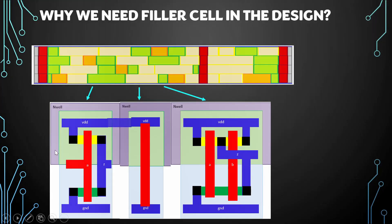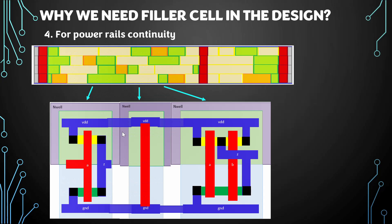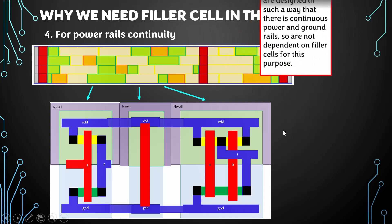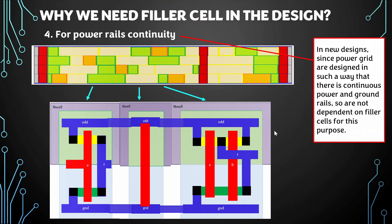If we stretch the VDD of one cell to the VDD of the filler cell and the ground to the filler cell ground, and continue the same, we will have a continuous rail of VDD and ground in the design. This gives another reason for having the filler cell — power rail continuity. However, in current designs, power grids are designed to already provide continuous power and ground rails, so we are no longer dependent on filler cells for this purpose. This was mostly used in older designs.